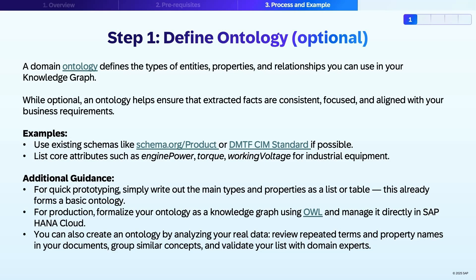and reuse the ontology across projects and enables integration with advanced analytics or AI analysis. Whether you start simple or go further, having a clear ontology ensures that you always extract facts that matter to your business, making automation more reliable and transparent.